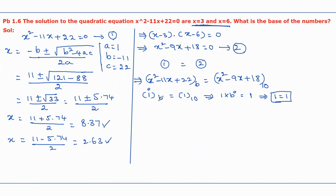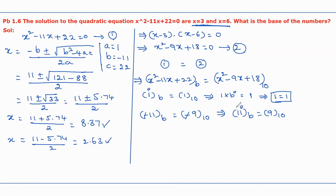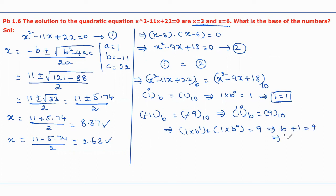Next, compare the x terms on both sides: minus 11 in base b equals minus 9 in base 10. The minus signs cancel, leaving 11 in base b equal to 9 in base 10. Converting: 1 times b to the power 1 plus 1 times b to the power 0 equals 9, giving b plus 1 equal to 9, so b equal to 8. This is the base value.